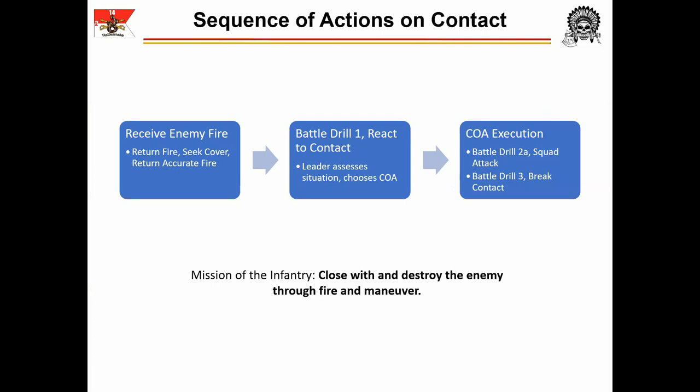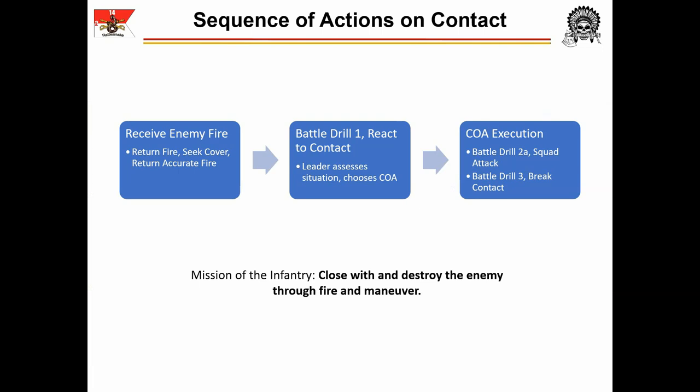In a standard infantry squad, the sequence of events is standard. The unit receives fire and conducts immediate actions — individual soldiers return fire, seek cover, and return accurate fire. The unit then automatically begins Battle Drill 1, react-to-contact, to generate options for the squad leader. The squad leader then assesses the situation and decides whether the unit will conduct a squad attack, Battle Drill 2 Alpha, or break contact, Battle Drill 3. The mission of the infantry squad is to close with and destroy the enemy through fire and maneuver. The mission of the reconnaissance team is different — to conduct reconnaissance and security operations to answer the commander's information requirements and to provide early warning to the protected force. In essence, your mission is to enable the line infantry to locate their objective and assault it effectively.